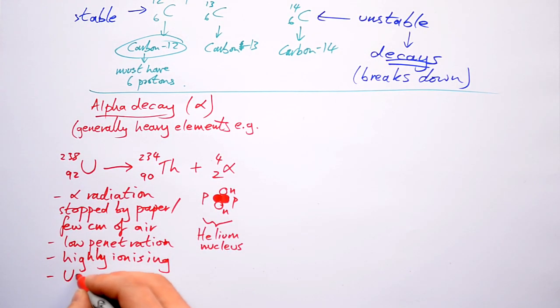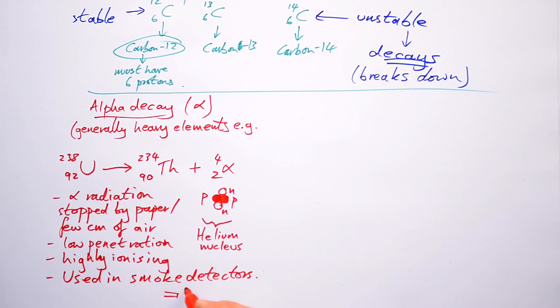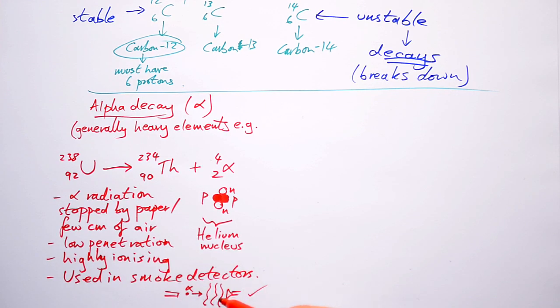Because it's stopped very easily, it's used in smoke detectors. We have a source which gives out alpha particles and we have a detector here. When everything's hunky-dory, the alpha particles can go across and everything's fine. But what if some smoke gets in the way? Then the alpha particles aren't going to make it to the detector. So something's up and that's when the alarm sounds.